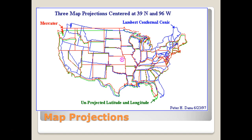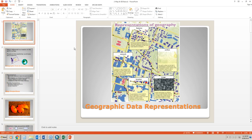Depending on where you're located, different selections need to be made or else you can mislead your audience. That ends the map projection and coordinate system video. We will now get into working with geographic data.